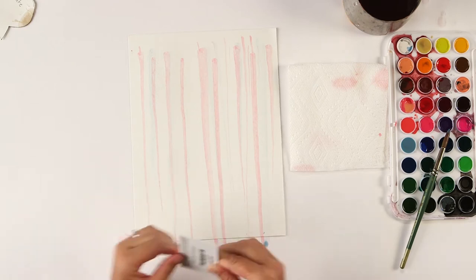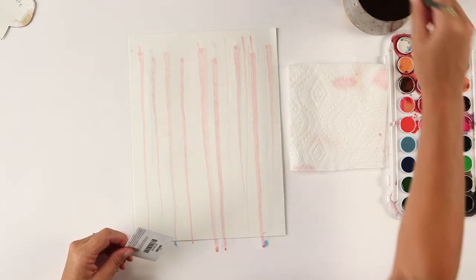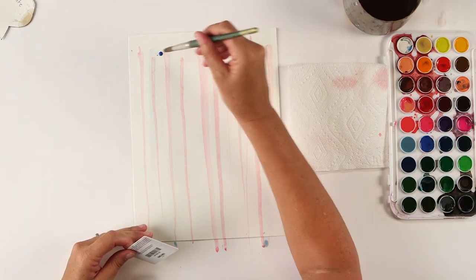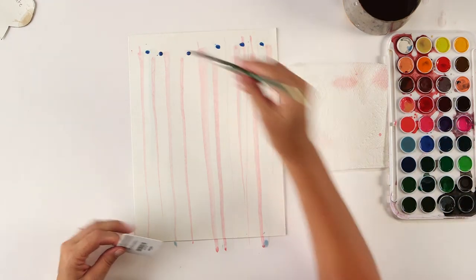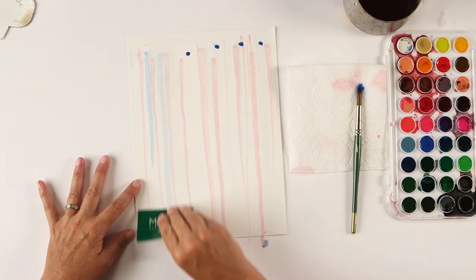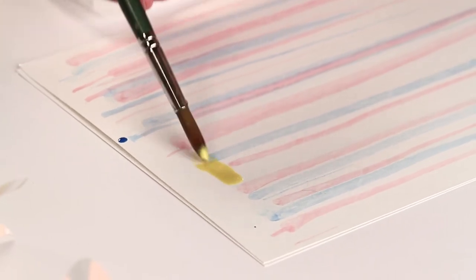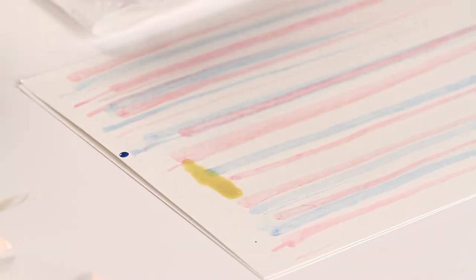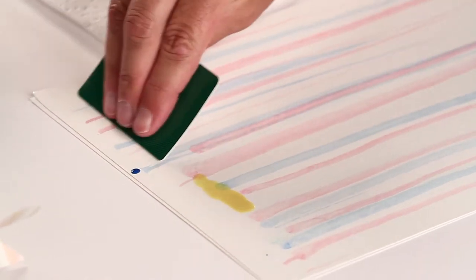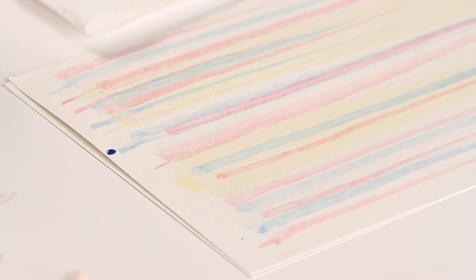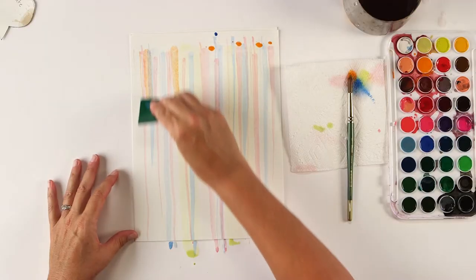That blue didn't really show up that well. Let's get a darker blue and I'm going to do a few more colors here, but you can go as simple or as crazy as you want with your colors. You could even do bigger stripes like this. And please experiment. Get two or three pieces of paper. Experiment with colors. You're going to like some of them better than others and that's just how it goes.